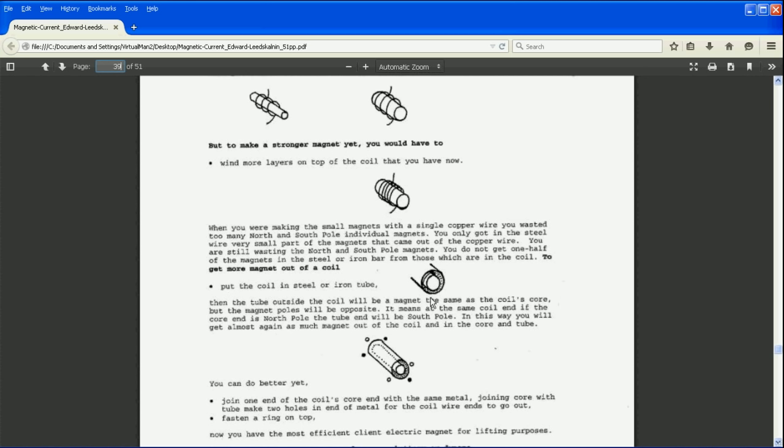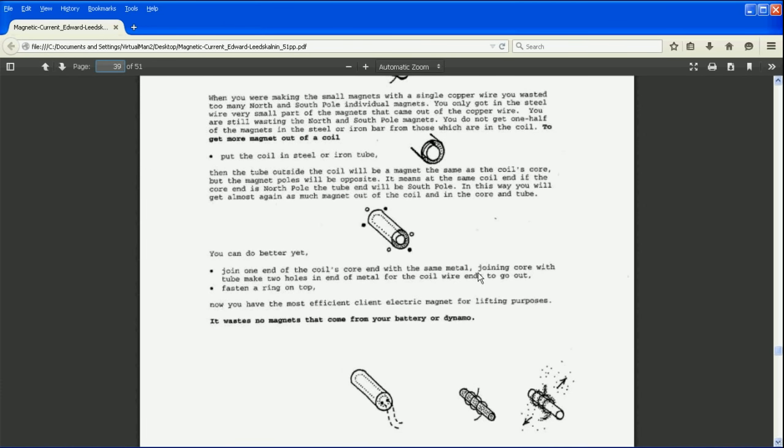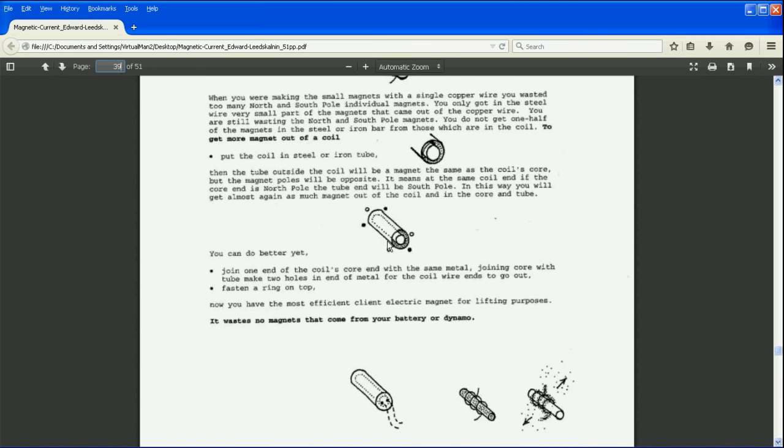But here's his third way to improve the system. He's talking about putting his coil inside of a tube. Remember he had a large tube right next to his rotor in the pictures shown earlier. I believe he had a coil inside there. Next he's talking about attaching more iron to the top of the tube to store even more magnetism.